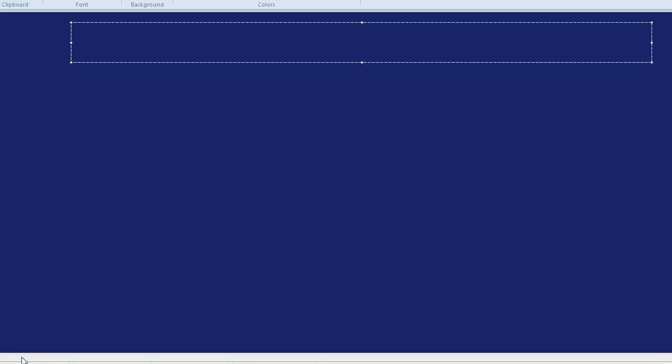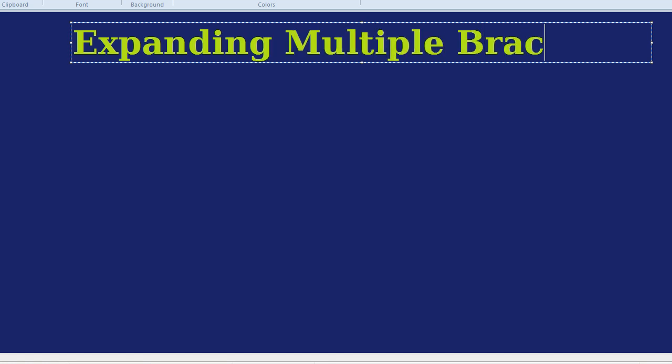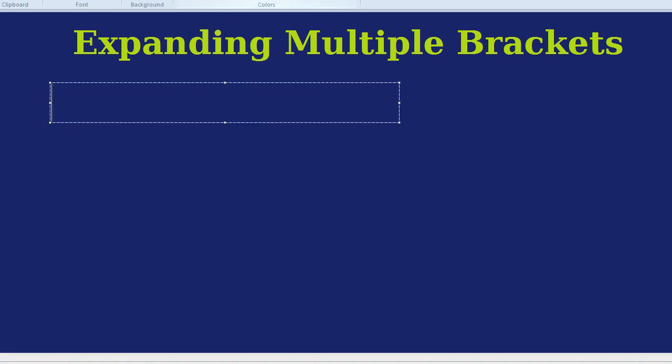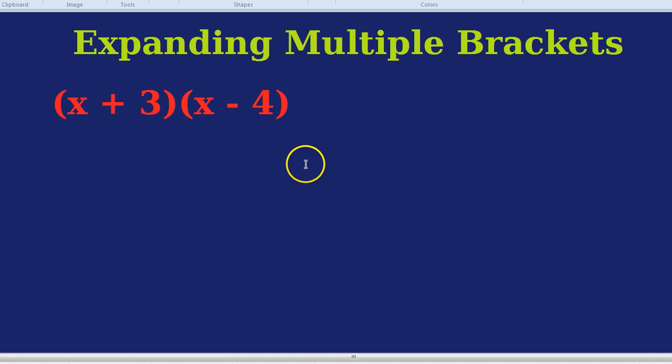There are a couple of different methods for expanding multiple brackets, but we're going to look here at my favorite, the box method. So we're going to be doing expanding multiple brackets. What are we talking about here? If we had an expression like x plus 3 times by x minus 4, so let's space that out, and we're multiplying those two brackets. How would we do that?